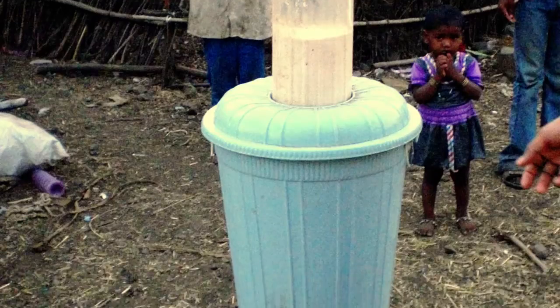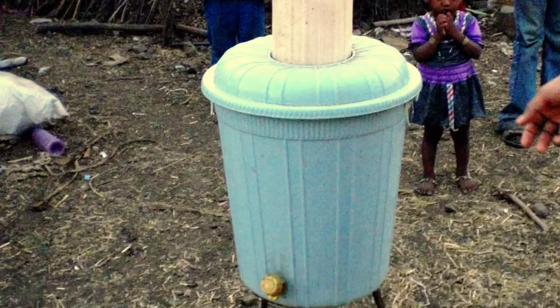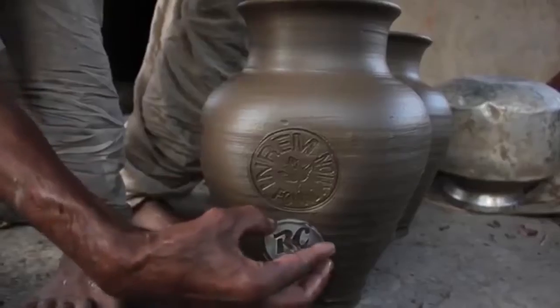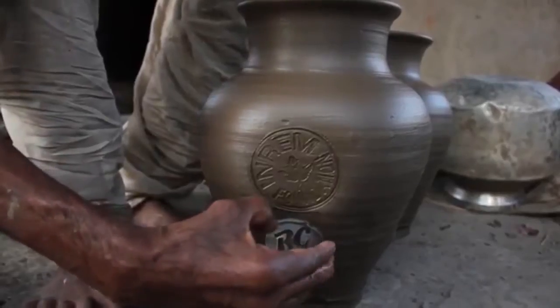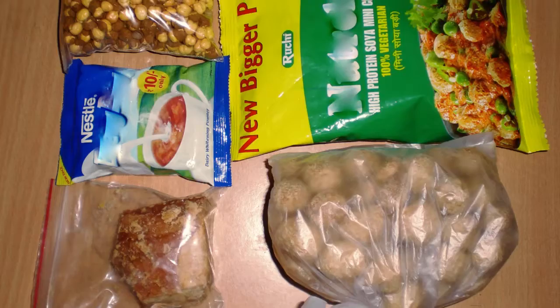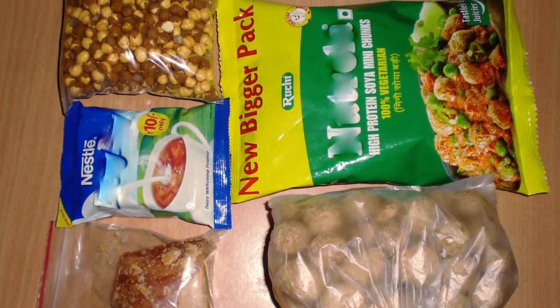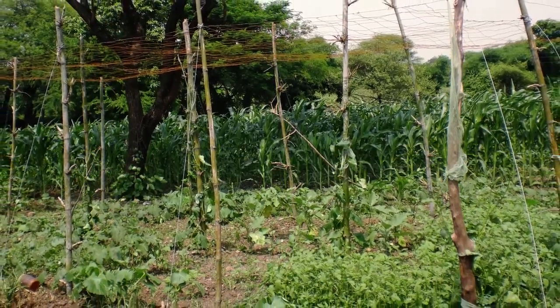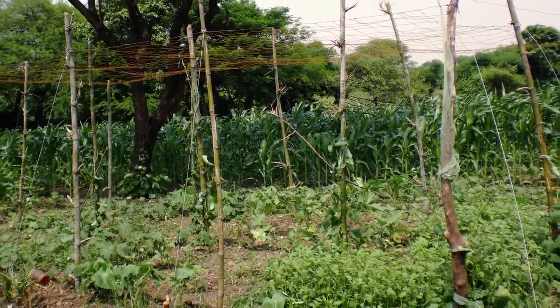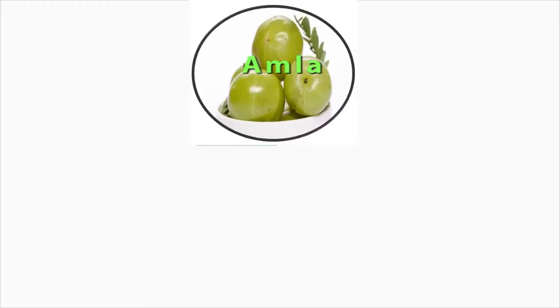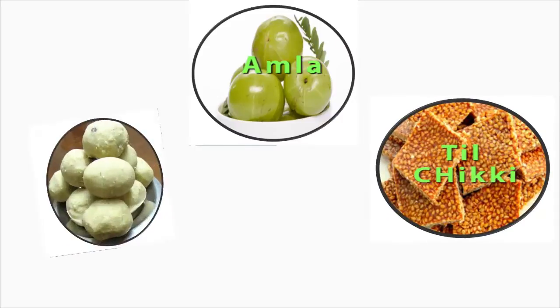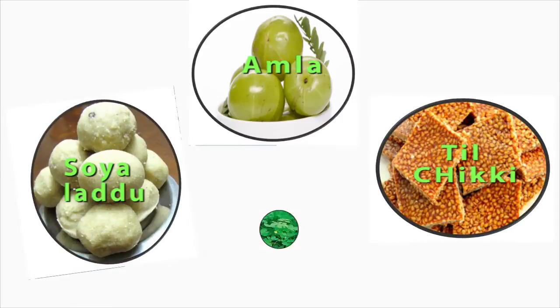In those situations, we provided them with defluoridating kits which we developed at INRAM. We also improved the nutrition of the children by providing them with locally available foods — we gave them amla, til chikki, soya laddu, and cashew tora powder.